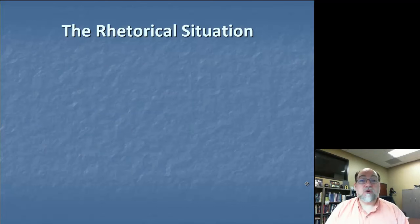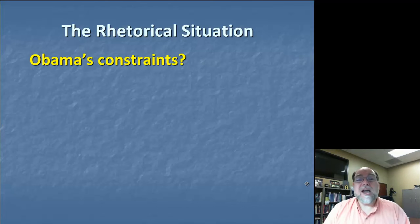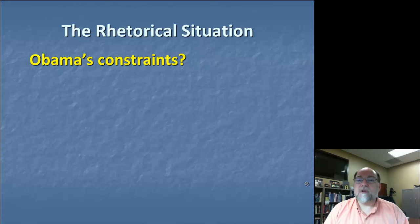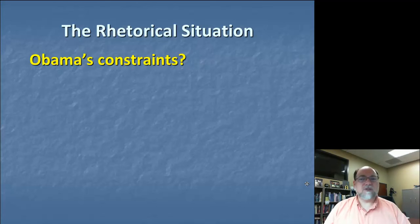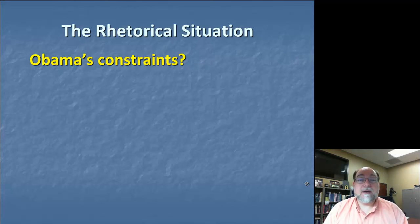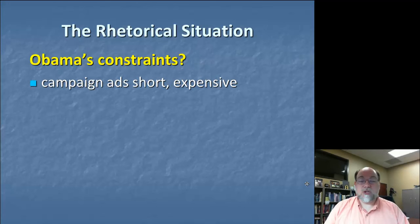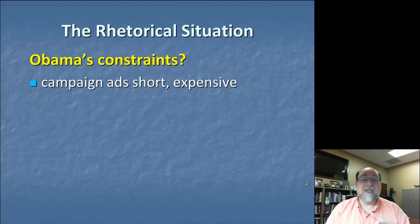The final element of the rhetorical situation are the constraints. What kinds of constraints are present in President Obama's situation? What factors might limit or challenge the rhetorical options he has available? One constraint that's going to be present whenever we're talking about campaign advertising is the fact that they're very short — no more than 30 to 90 seconds at a clip. So you need to pack in an effective, persuasive argument within a very short period of time. And at the same time, these are ads that are expensive to produce, but more importantly, expensive to buy.